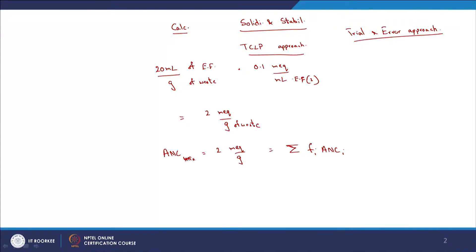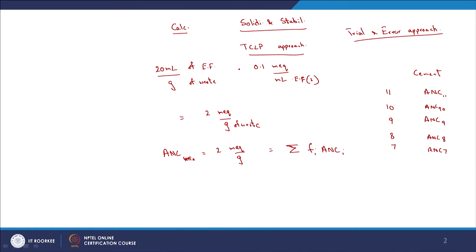For example, cement at pH 11, 10, 9, 8, and 7 will have different acid neutralizing capacities. You choose the ANC at the particular pH at which the relevant heavy metals are not going to exceed the threshold — derived from KSP or relevant charts. You then interpolate or extrapolate as necessary and plug that value in. Essentially, you are just trying to pass the test.